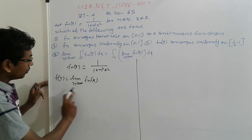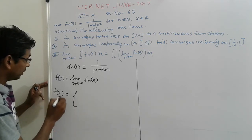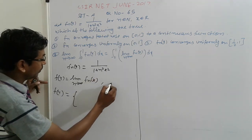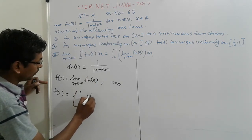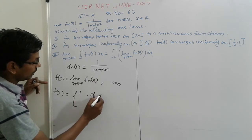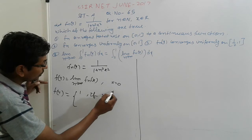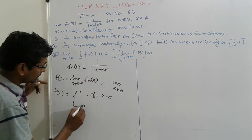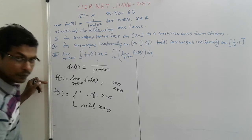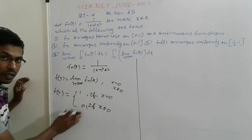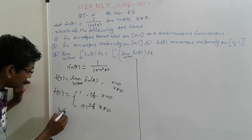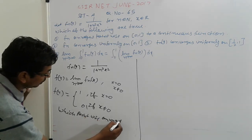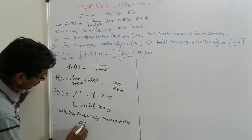So here we get two values of f(x). When we put x equal to 0, then we get 1, that is f(x) = 1 at x = 0. And if x is not equal to 0, then we get 0. So we get two values, which means f_n(x) is pointwise convergent on [0,1].